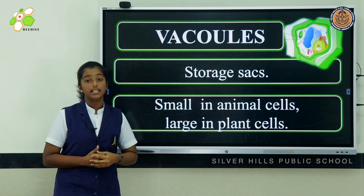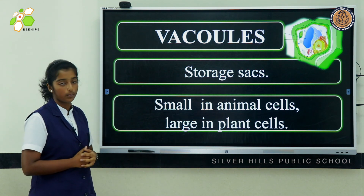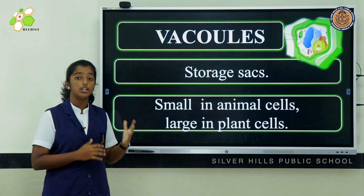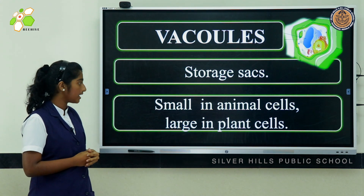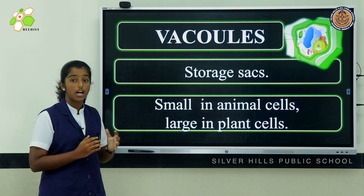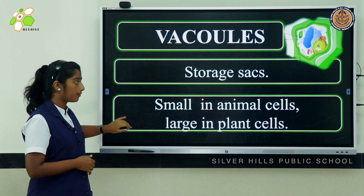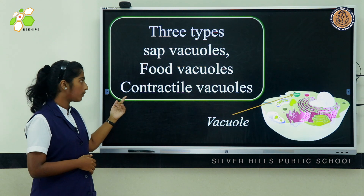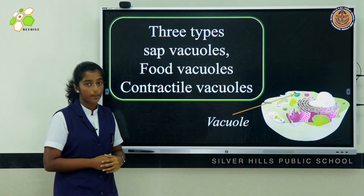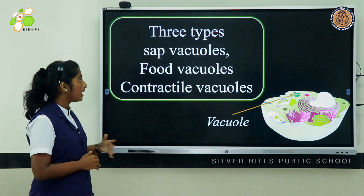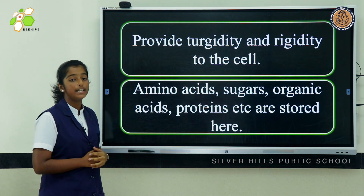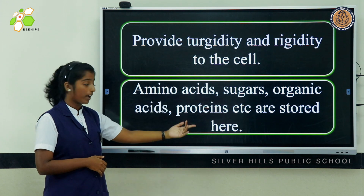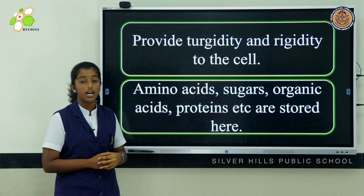Moving on to the last cell organelle, which is the vacuole. Vacuoles are storage sacks — they contain solid and liquid contents. They are small in animal cells and large in plant cells. They are of three types: sap vacuoles, food vacuoles, and contractile vacuoles. Vacuoles help in providing turgidity and rigidity to the cell. Amino acids, sugars, organic acids, proteins, etc. are stored in them.